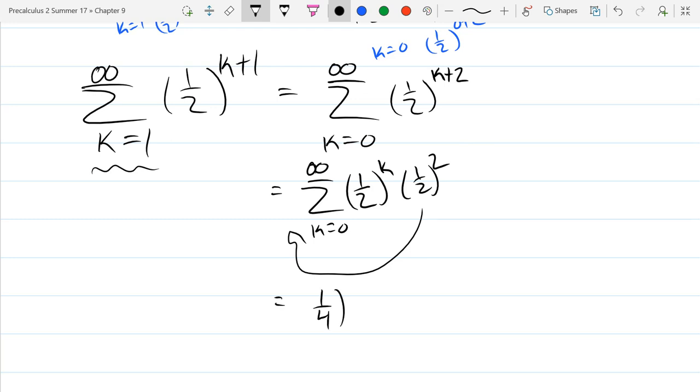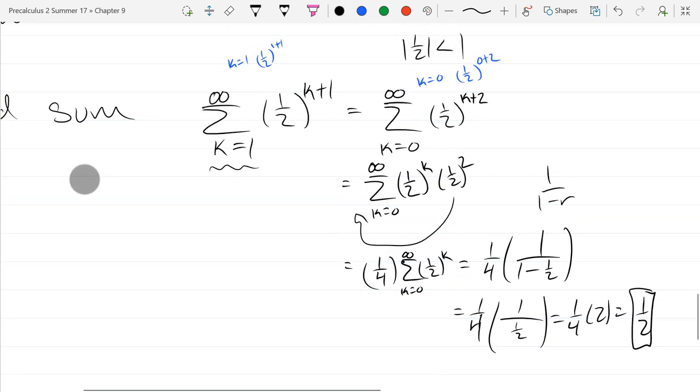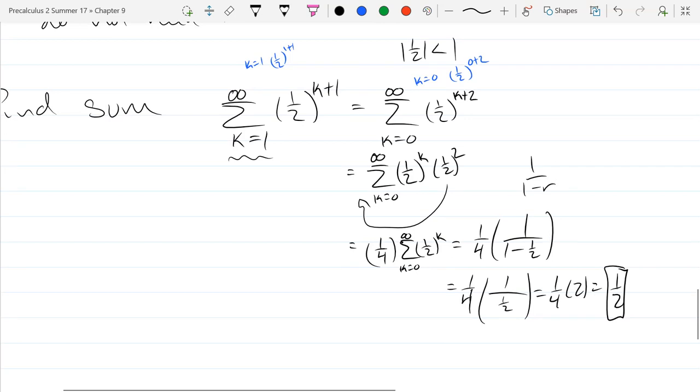So 1 half squared is 1 fourth, and now we can use the 1 over 1 minus r formula. Now this is an okay answer but I'm going to clean it up. 1 minus 1 half is 1 half, so this is the reciprocal of 1 half, which is 2. So we get 1 half as our sum, the value of this sum. So we just found the first sum.